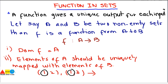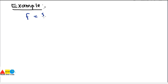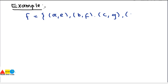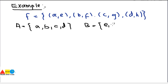Those are the two conditions required for a function in sets. Let's apply an example and find out whether these conditions are satisfied. Let's say we have a function with ordered pairs: (a,e), (b,f), (c,g), (d,h). The sets are A = {a, b, c, d} and B = {e, f, g, h}. We have to find whether f is a function from A to B.